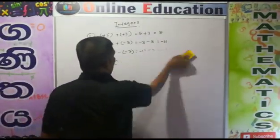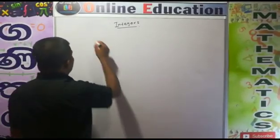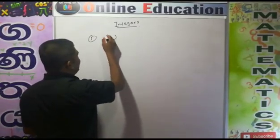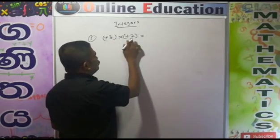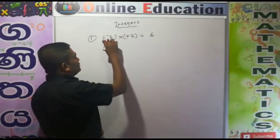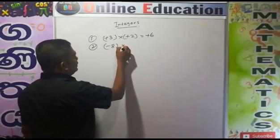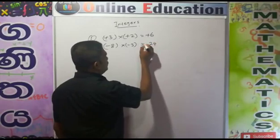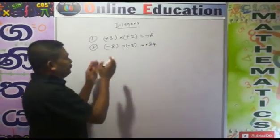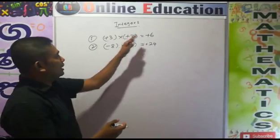Now we will see how we apply this knowledge for multiplication. First example: plus 3 into plus 2. First, just multiply the numbers: 3 into 2 equals 6. Then multiply the signs: plus into plus equals plus. So the answer is plus 6. Second example: minus 8 into minus 3. 8 into 3 equals 24; minus into minus equals plus. So the answer is plus 24.